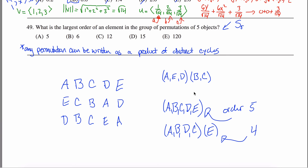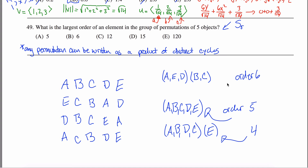The key result is: you can find the order of any element in a permutation group by taking the least common multiple (LCM) of the lengths of its distinct cycles. The 3-cycle returns to normal every 3 steps, the 2-cycle every 2 steps, so both return to normal every LCM(3, 2) = 6 steps. The order is 6.